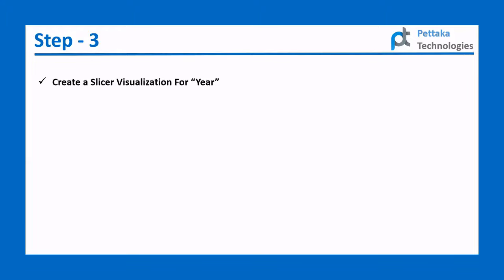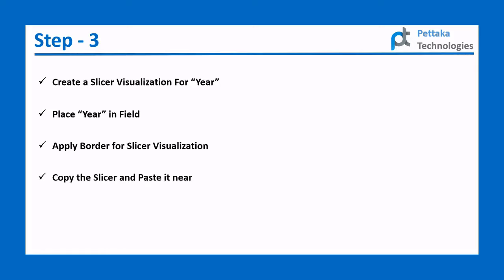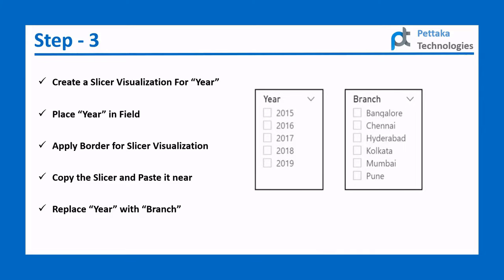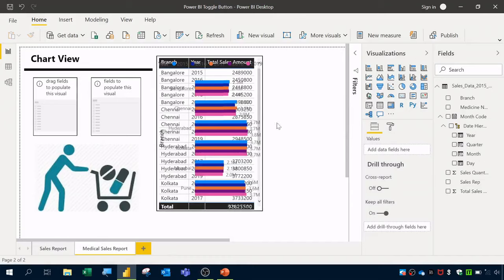In Step 3, create a new slicer visualization for Year by placing Year in the Field and applying a border. Then copy that slicer, paste it nearby, and replace Year with Branch in the new slicer. The final output will show two slicers.